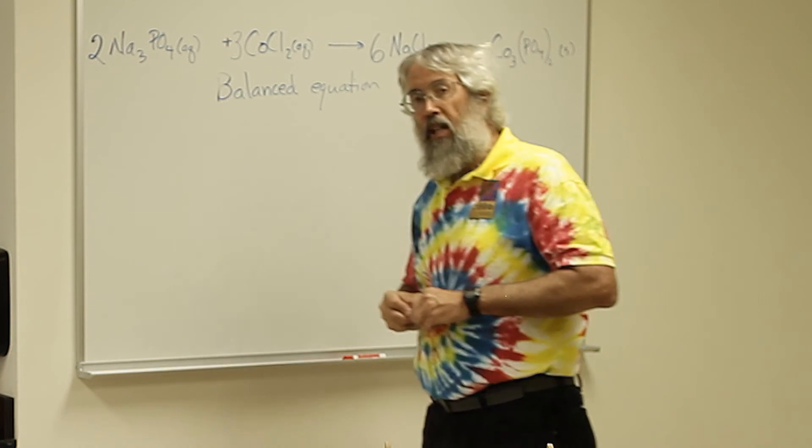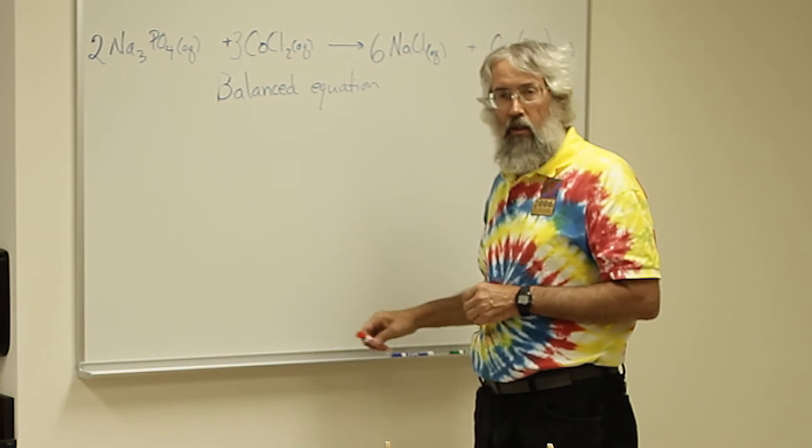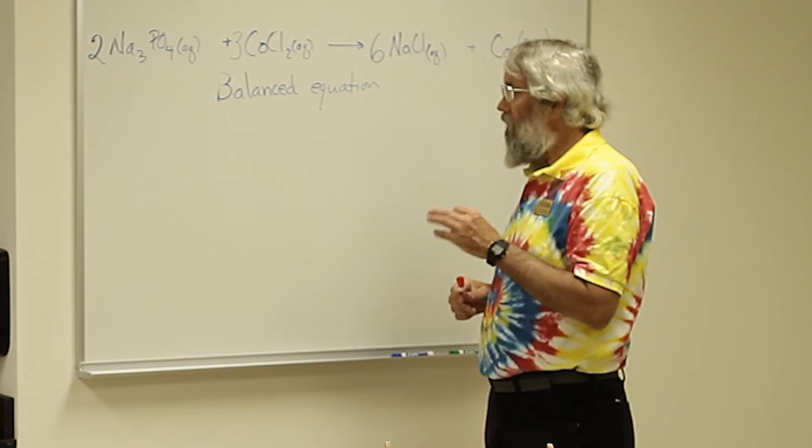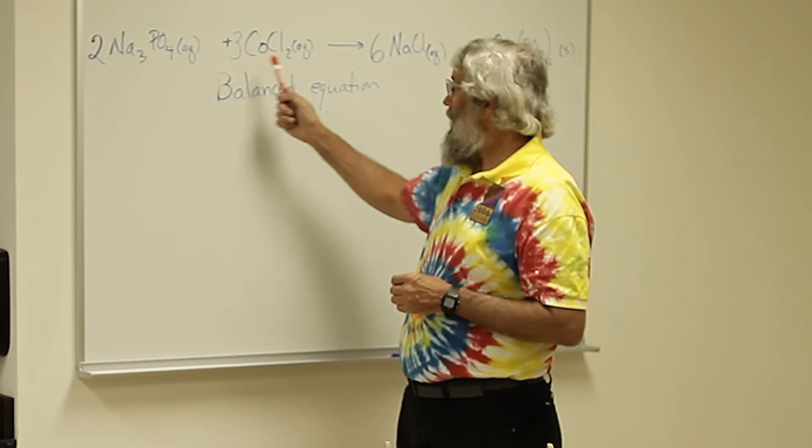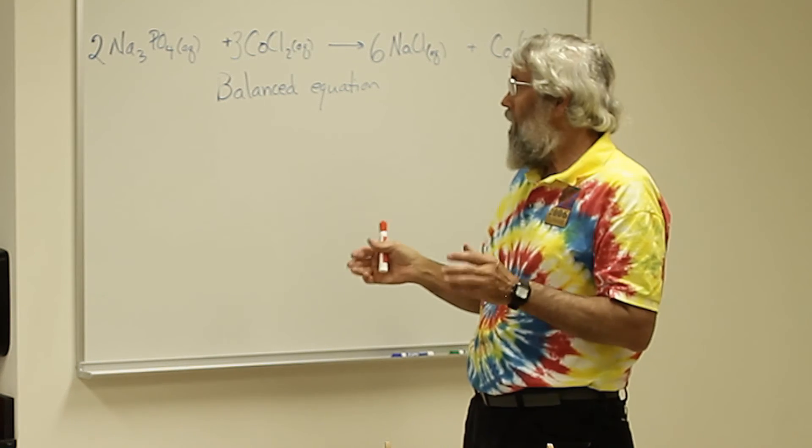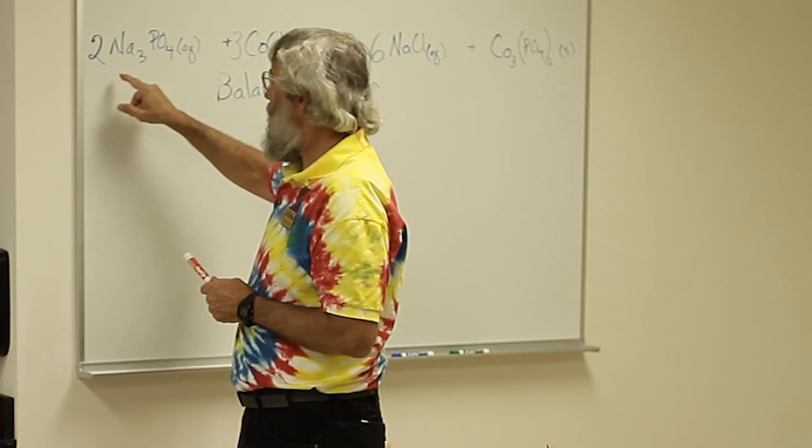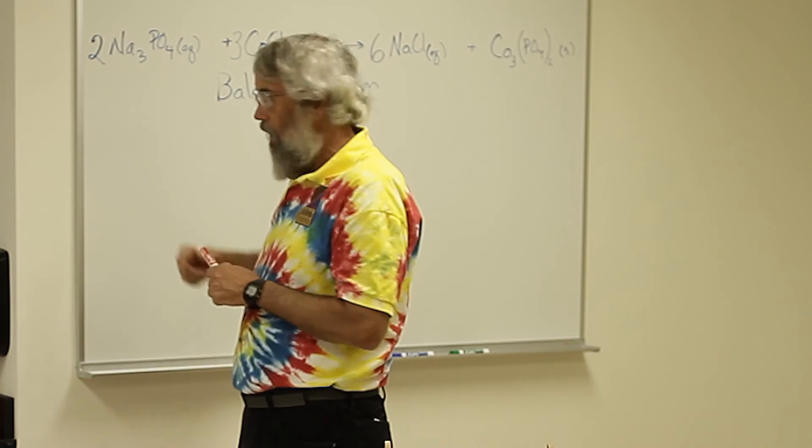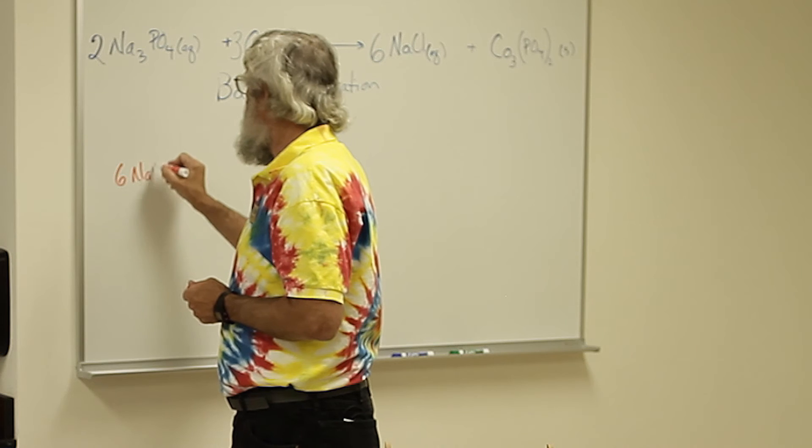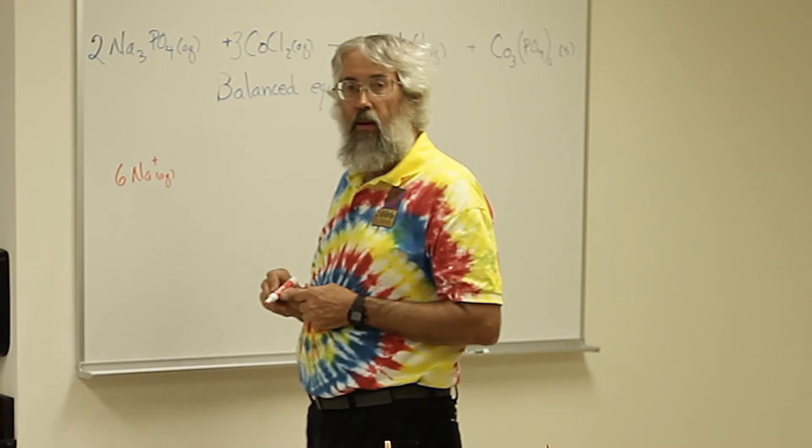It is not yet an ionic equation because in an ionic equation we have to write what ions are present in aqueous solution. So anything that has AQ by it can be separated into the individual ions. So we have sodium ions, and there's a total of two times three is six. So we have 6 Na+ aqueous because they are present in aqueous solution.